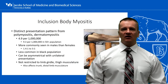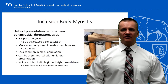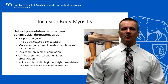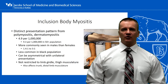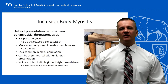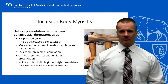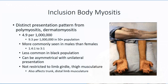The epidemiology for inclusion body myositis is distinct from what we observed with dermatomyositis and polymyositis. The two previous conditions were more prevalent in women and in black populations. For inclusion body myositis, the reverse is true, with higher incidence in males and lower incidence in black populations.